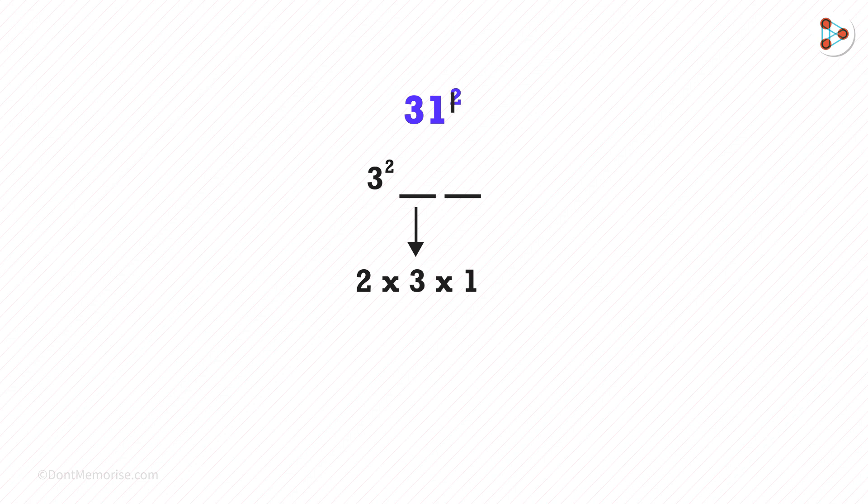And the second digit is 1. So in the end, we will write 1 squared. So 3 squared is 9, 2 times 3 times 1 is 6, and 1 squared is 1. Your answer.